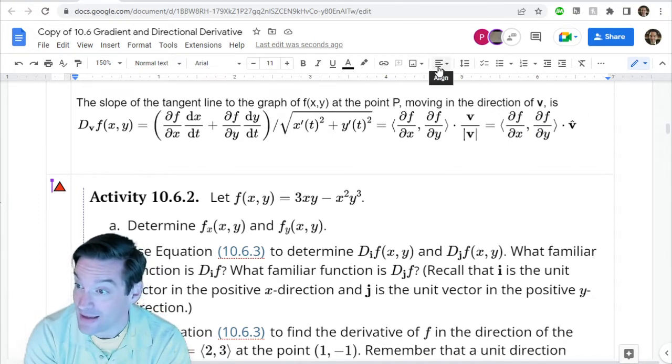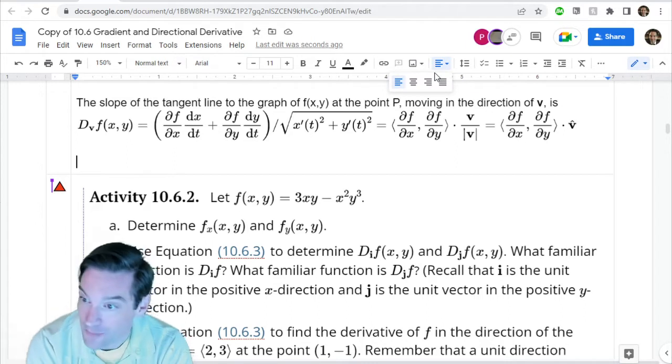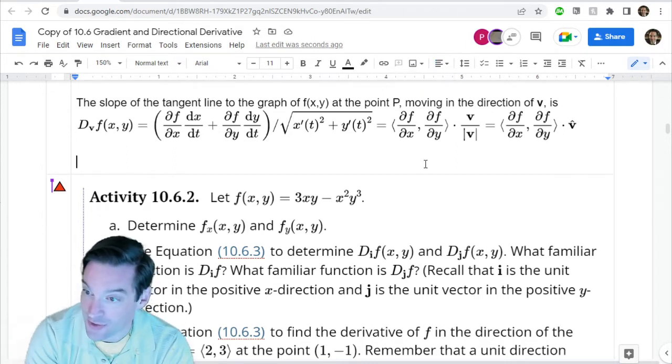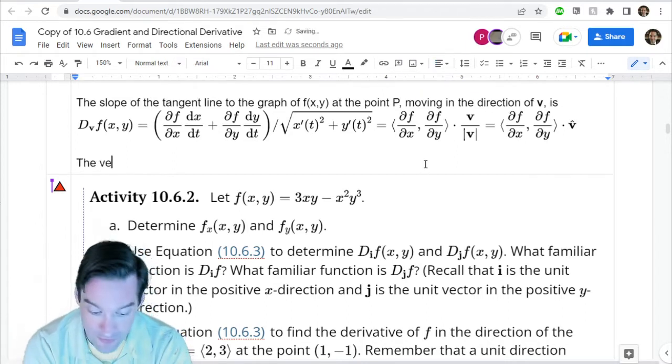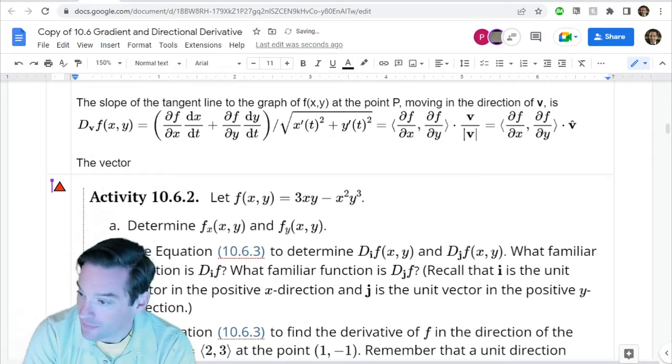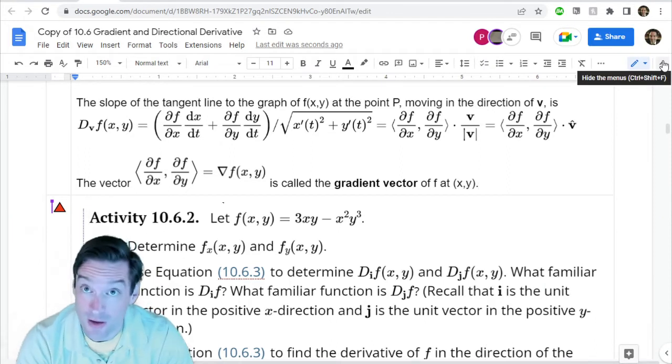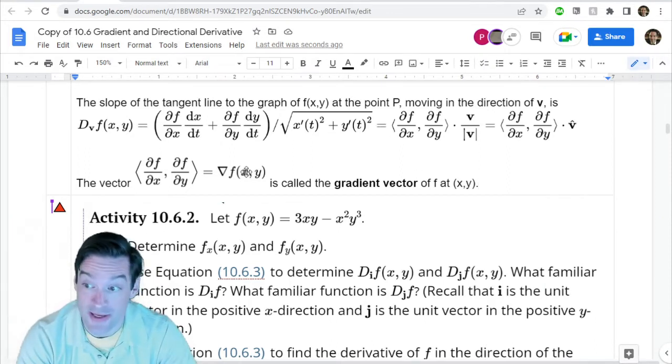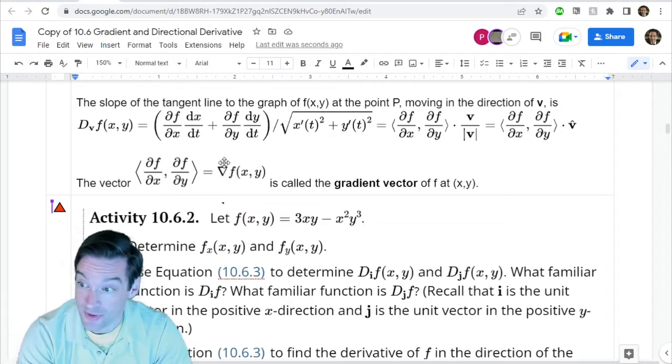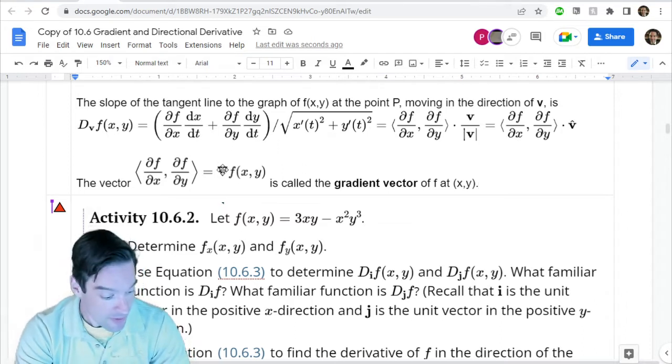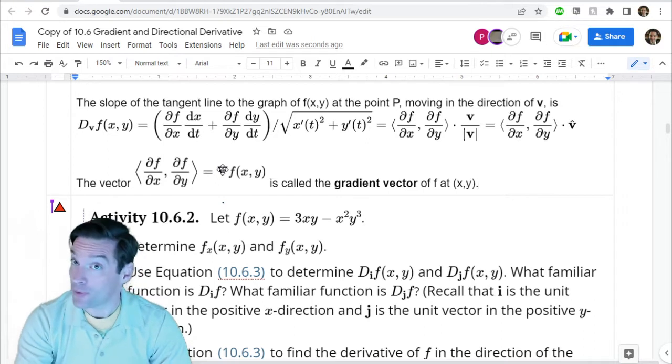And so that is the vector that we call the gradient vector of the function. So that vector whose components are the partial derivatives of a function of several variables is called the gradient vector. And we use this nabla symbol, nabla f, to represent the gradient vector. So that vector is pretty important.